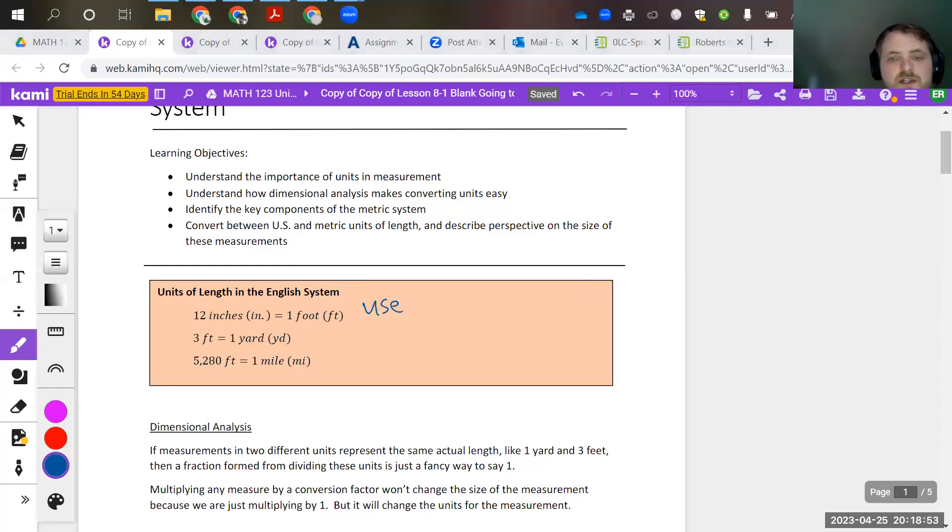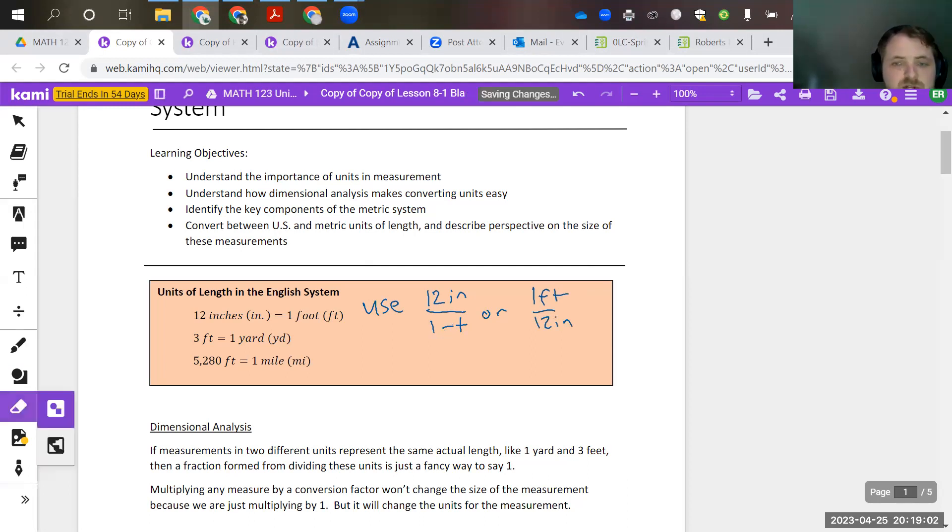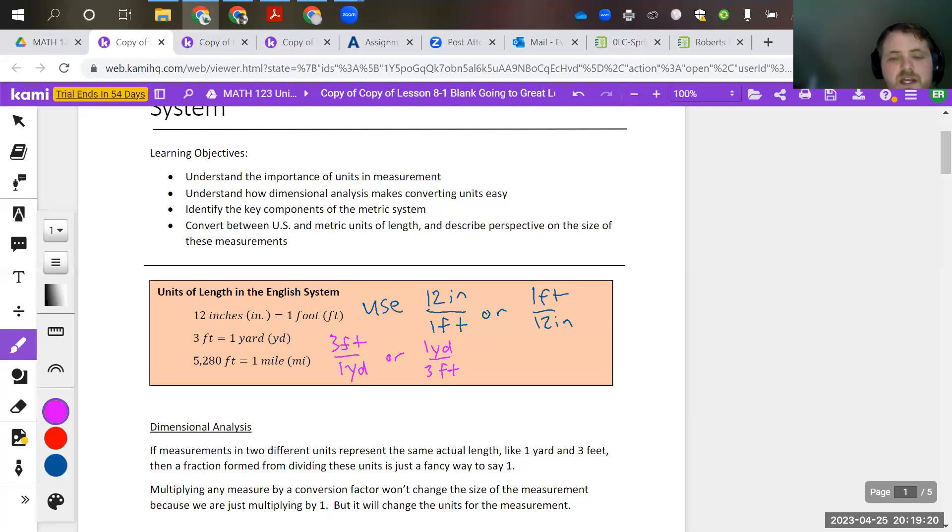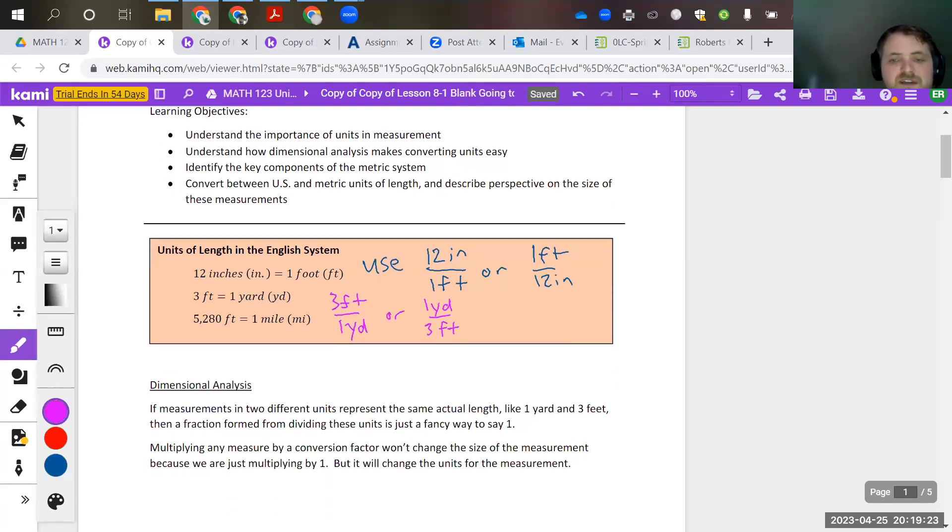We want to either use 12 inches over one foot or one foot over 12 inches. So lots of fraction work involved here, which I know is stressful for most of us. It's going to be the same concept with the three feet equals one yard. You're going to use either three feet over one yard, or you're going to use one yard over three feet. So there's a little bit of an explanation down below. I'll let you read it, but it's just a fancy way to multiply by one.